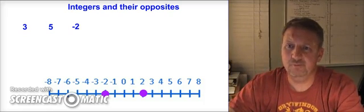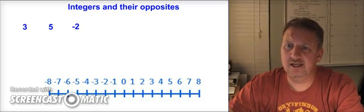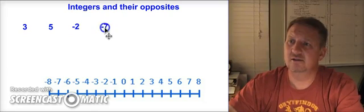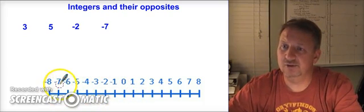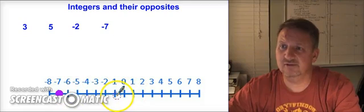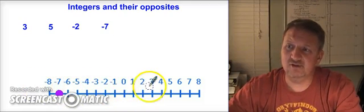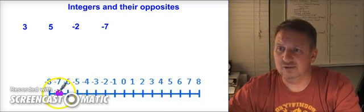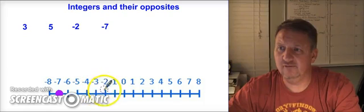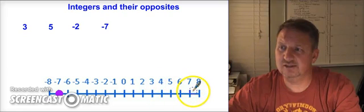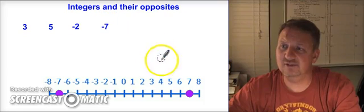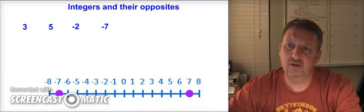The last number-line example is negative seven. We find negative seven on the number line and graph it. Negative seven is seven places to the left of zero, so its opposite is to the right. Counting one, two, three, four, five, six, seven places to the right, the opposite of negative seven is positive seven.